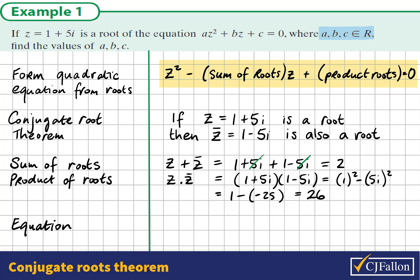We can write our equation now. We have z squared minus the sum of the roots, that's minus 2z, plus the product of the roots, 26, equals 0. So in this equation, a is 1, b is negative 2, and c is 26.